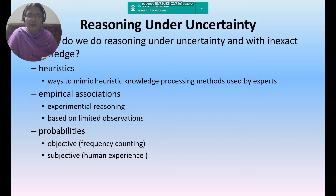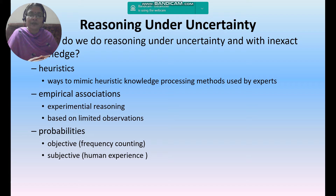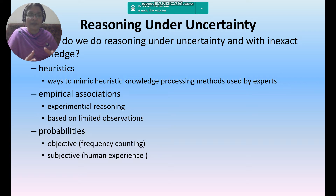The next one is empirical associations — experimental reasoning based on limited observations. And the last one, probabilities, in two cases: subjective and objective. Subjective is the human experience, whereas objective is the frequency counting. So reasoning under uncertainty is done with inexact knowledge using these three ways: heuristics, empirical associations, and probabilities.